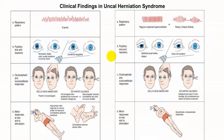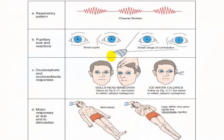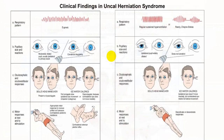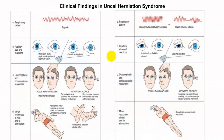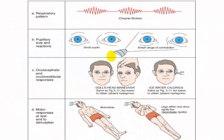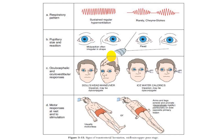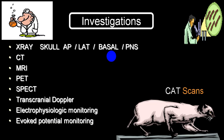These slides summarize the findings in uncal herniation across stages, including respiratory patterns, early diencephalic stage, lower pontine stage, and transtentorial herniation. This content will be covered in more detail in the herniation chapter.